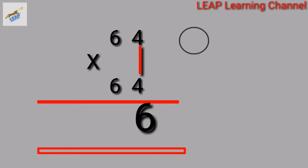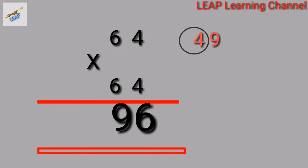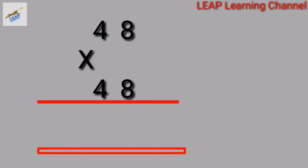Next number, 64. 64 into 64. 4 into 4 is 16. Carry over 1. Cross multiply: 6 into 4 is 24. Then double it: 24 into 2 is 48. 48 plus 1 is 49. Write 9, carry over 4. 6 into 6 is 36. 36 plus 4 is 40. So square of 64 is 4096.